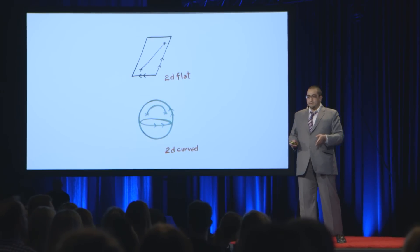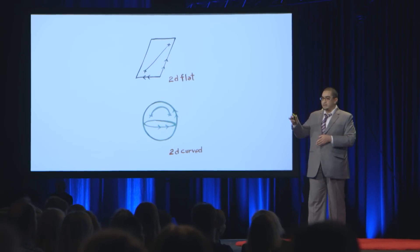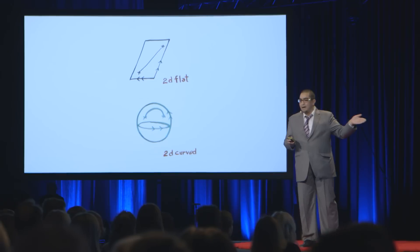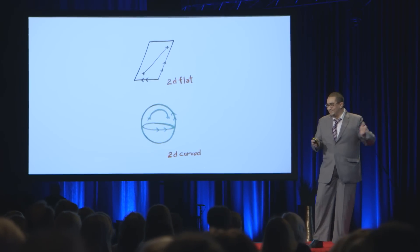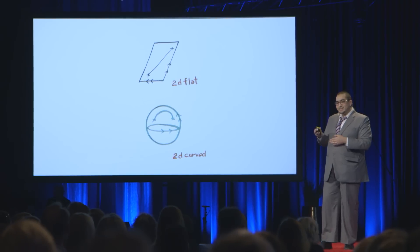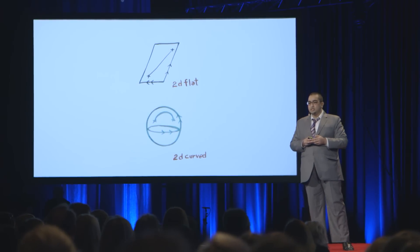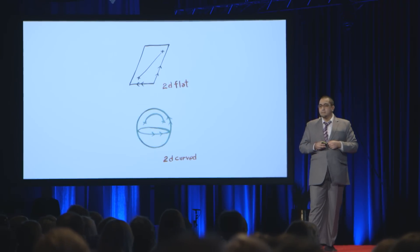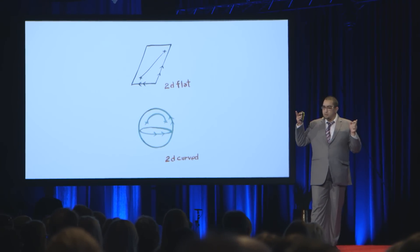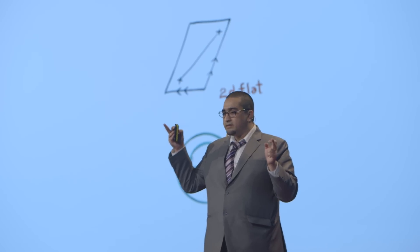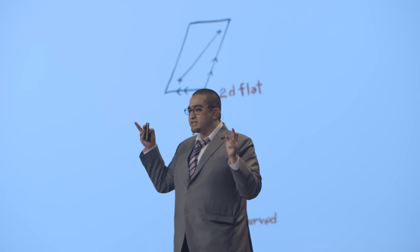Beyond that, two dimensions. Now you have two directions to move. Imagine a sheet of paper. You can go along the length or along the width. But if you keep going, you will just never come back — you will keep going around that length. And if you keep going the other way, you will still keep going. This is an example of a two-dimensional flat object. Draw any two points on this two-dimensional sheet of paper.